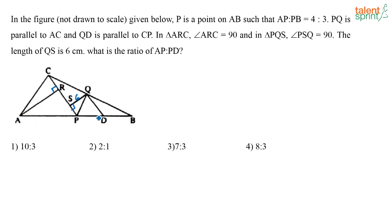Now, if you consider triangle ACB, see it is given here that PQ is parallel to AC. What can I say? I can say AP by PB is equal to CQ by QB, and already it is given that AP by PB is equal to 4 by 3. So this is equal to 4 by 3.